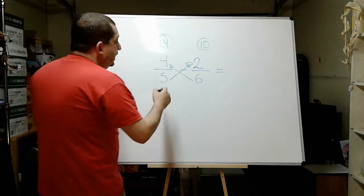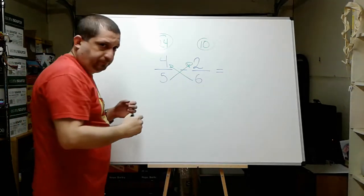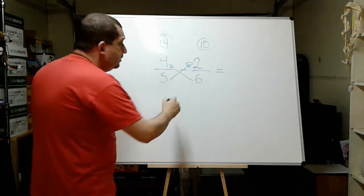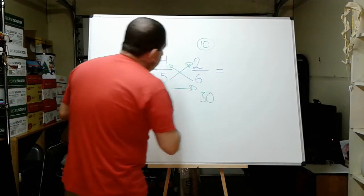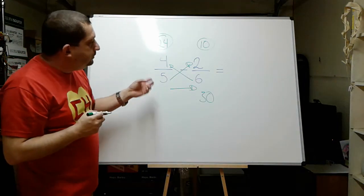It just makes you feel good. And now how much is 5 times 6? 5 times 6 equals 30. Very nice.